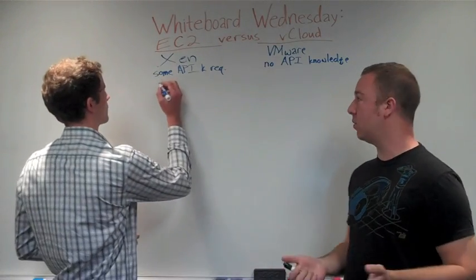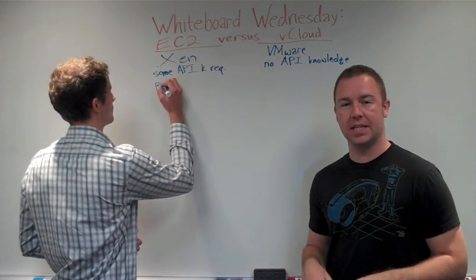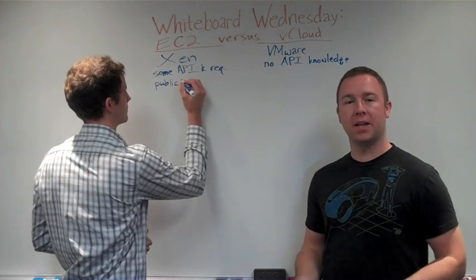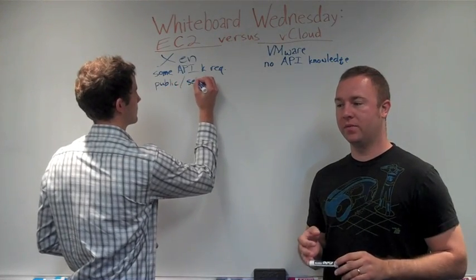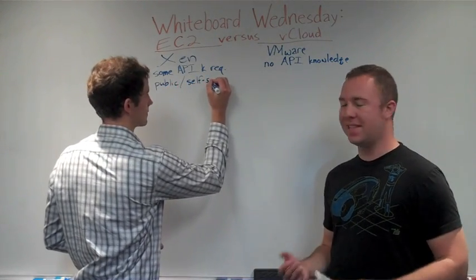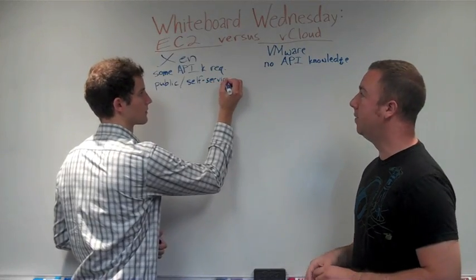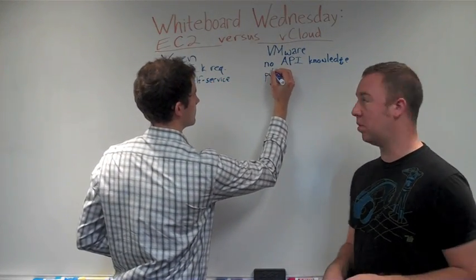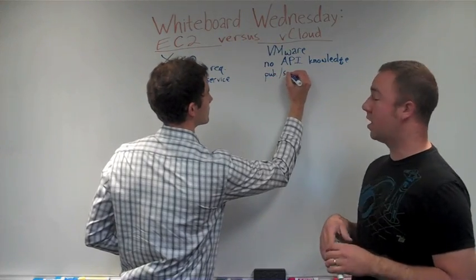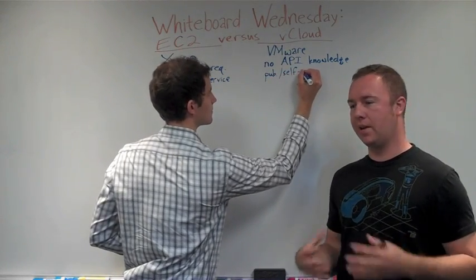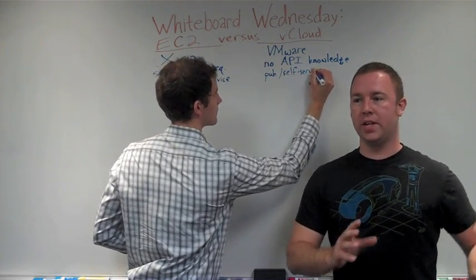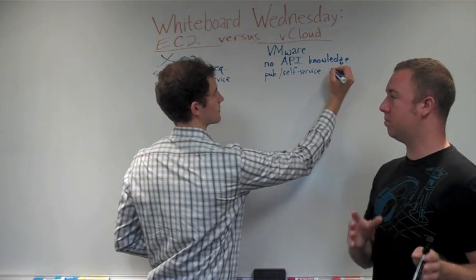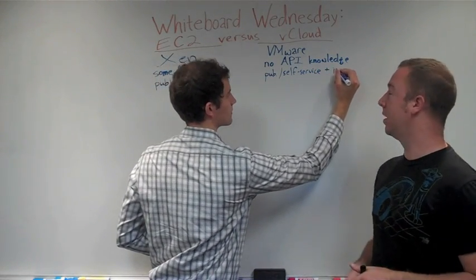Express is the self-service public cloud — rapid deployment, easy to use. vCloud Express and EC2 are kind of on the same plane. When we talk about vCloud as a whole, we're talking about integrating your internal processes, both private and public clouds.